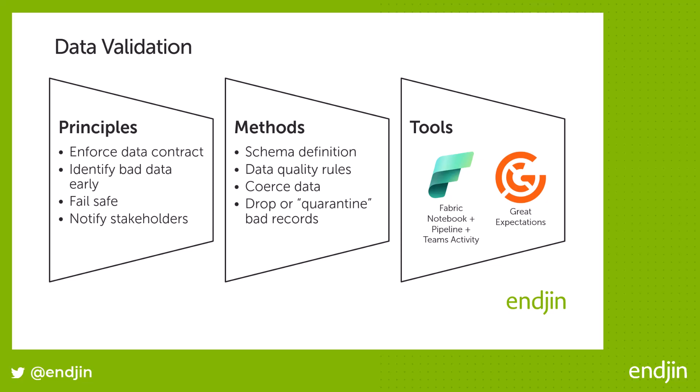In this case, we're going to use a Fabric notebook, importing a popular Python package called Great Expectations, and we're going to use that to define and apply a set of data quality rules. We will then deliberately introduce some bad data to show how we can detect and then drop the bad rows before writing the good rows to the silver area of the lake.